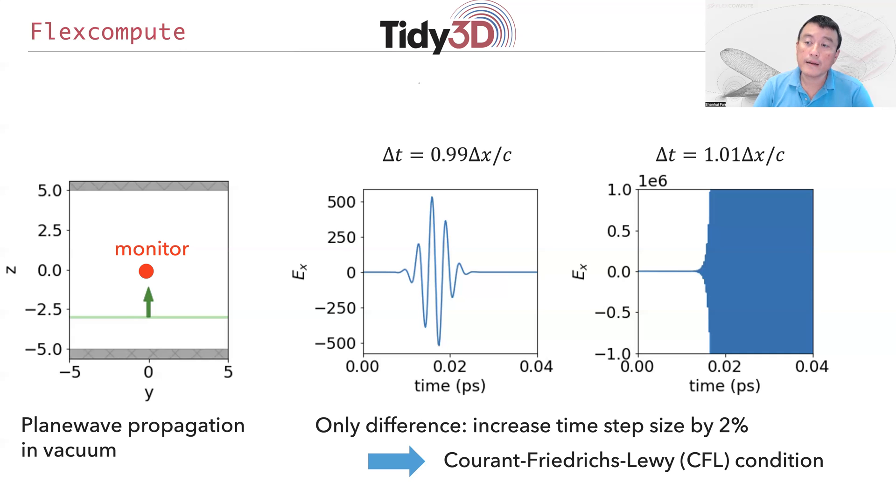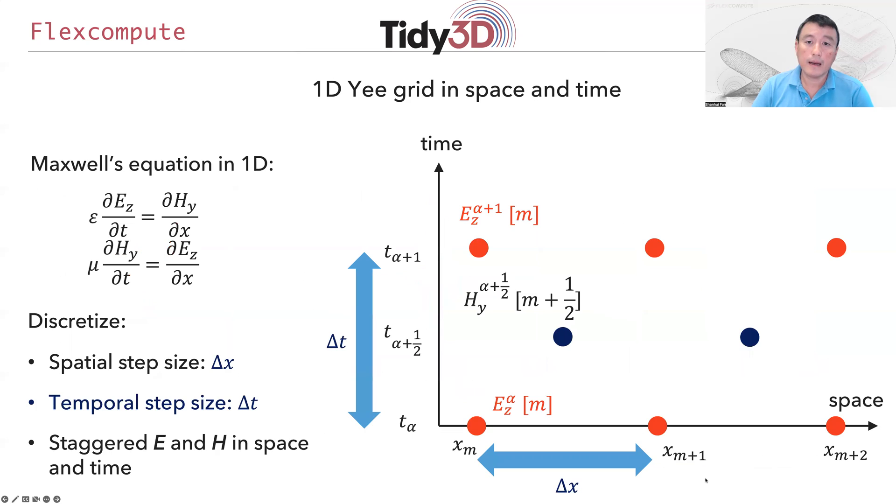Here I'd like to provide a simple set of arguments for deriving the condition upon which you can choose Δt. This is called the CFL condition. Let's start with one dimension. In one dimension, we discretize Maxwell equation in both space and time. Here is a representation of the time stepping process.